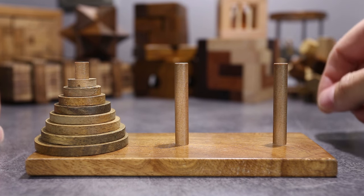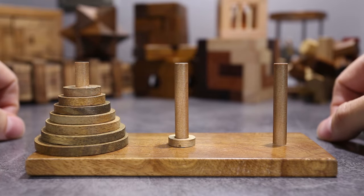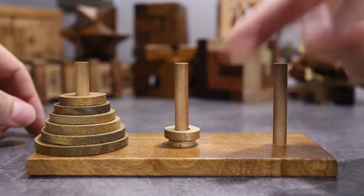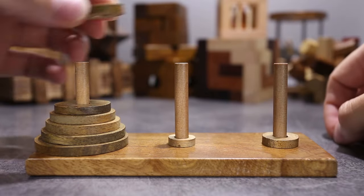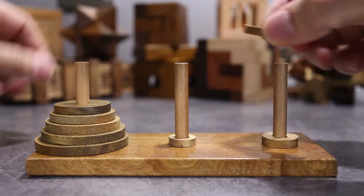The first rule: you have to move only one disc at a time. The second rule is that you can't put a bigger disc on a smaller one. So this move is wrong and this one is wrong as well.